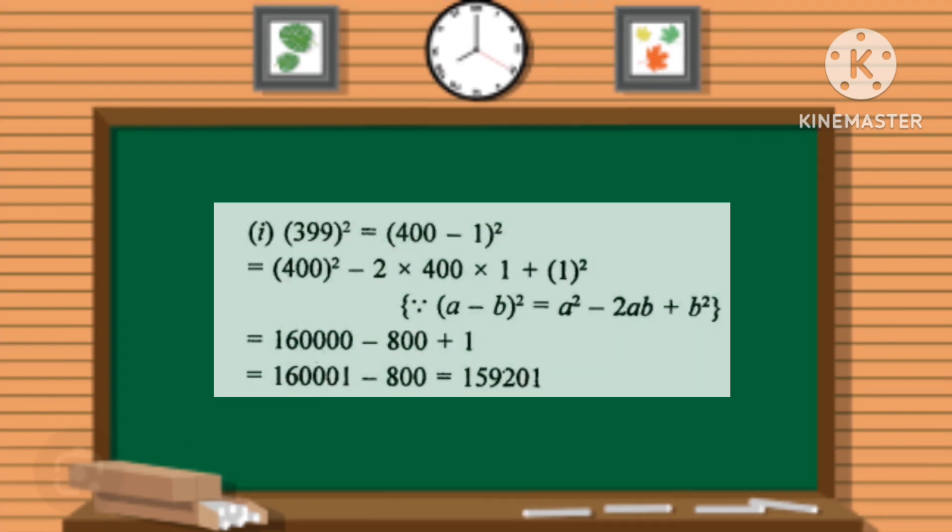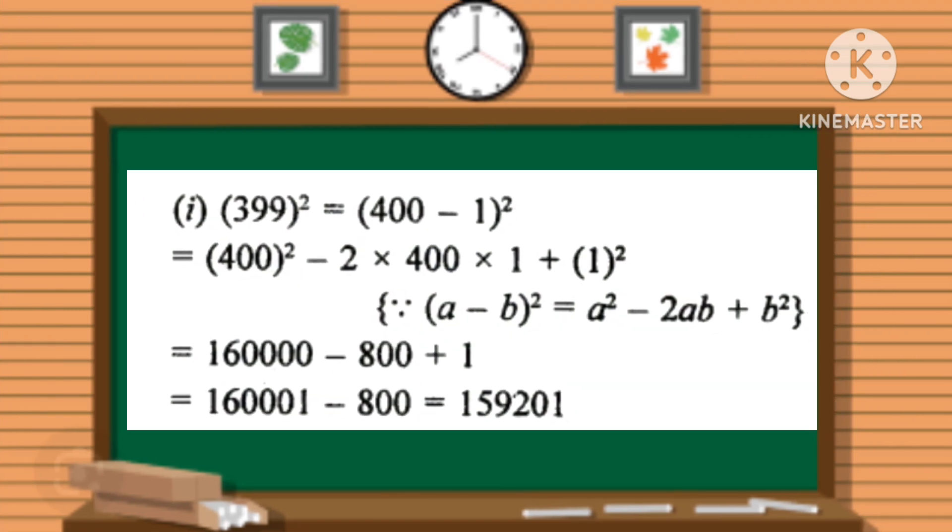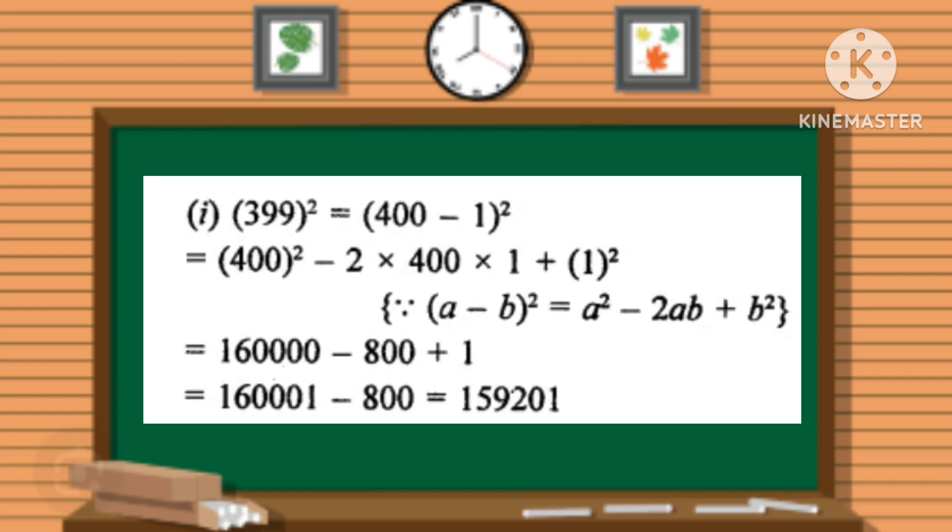Let's discuss another type of sums where the values are in numericals only and you have to evaluate them using identity formulas. 399² you have to break up into (400 - 1)². As per identity rules, you have to evaluate them. We broke the number so that we can use the identity formula. Here 400 is a and 1 is b, so a² - 2ab + b².